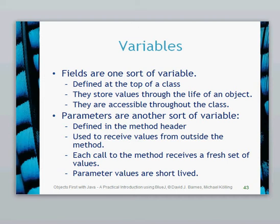Another kind of variable is a parameter. This is like the parameters which we gave in the constructors. They are defined in the header of a method or the header of a constructor, and they are used to receive values from other places. Every time the method is called, that variable gets created again, and when you pass a value to that method, the parameter effectively just uses that value each time — so it's reset. This parameter is only short-lived. If I've got a parameter in the constructor, I cannot get access to that parameter in another method, because it's only local to that constructor. Similarly, if I have a parameter in another method, I can't get access to that parameter from the constructor. So, parameters are short-lived.